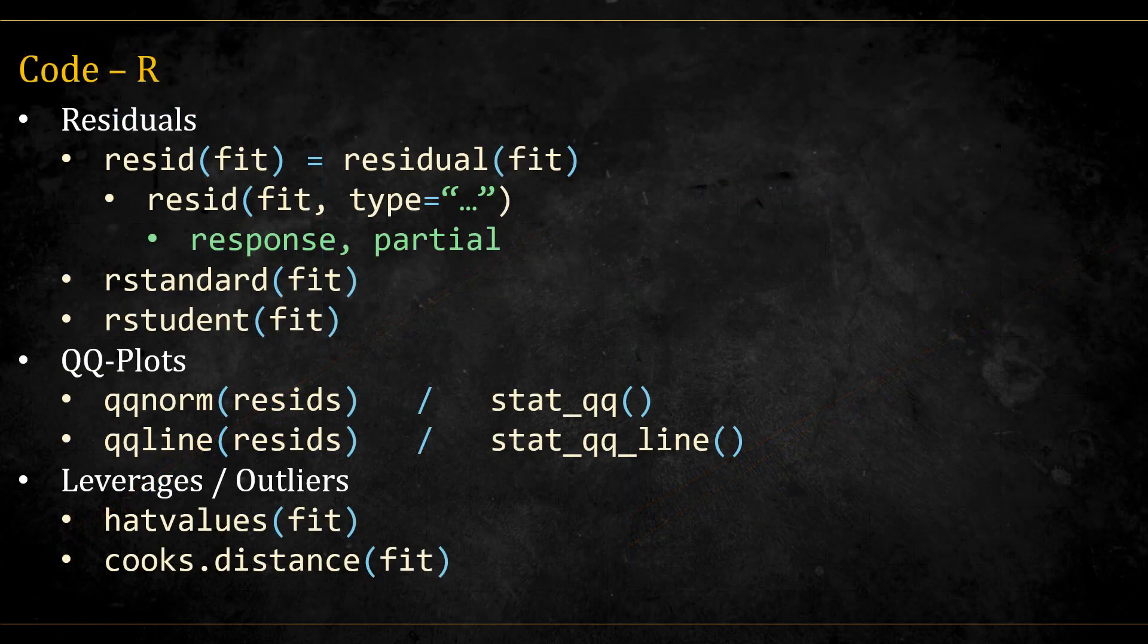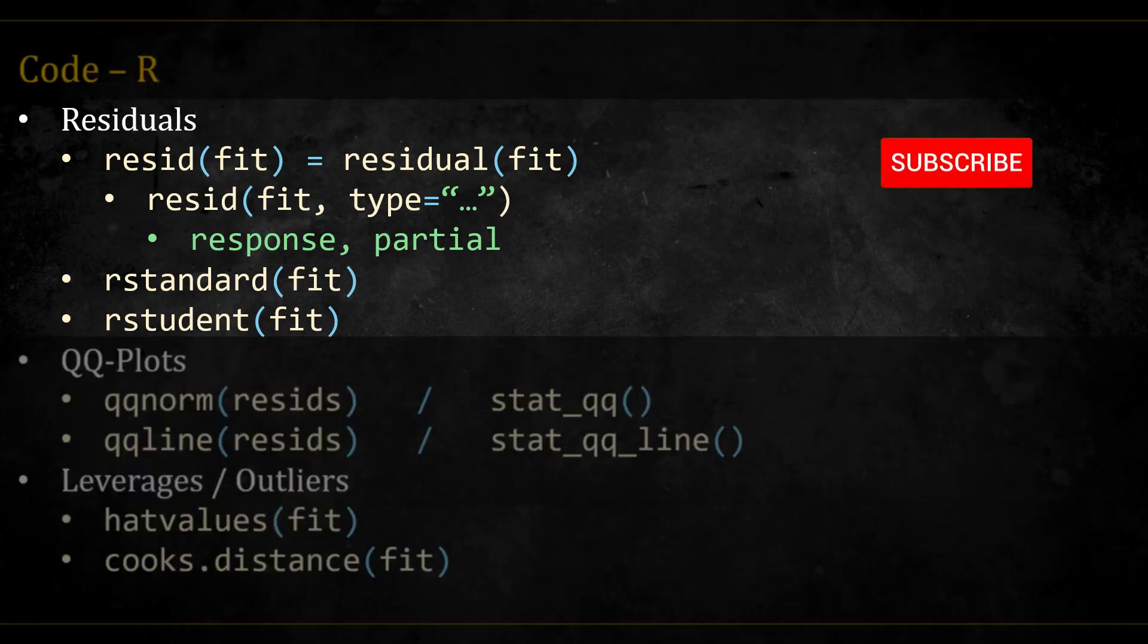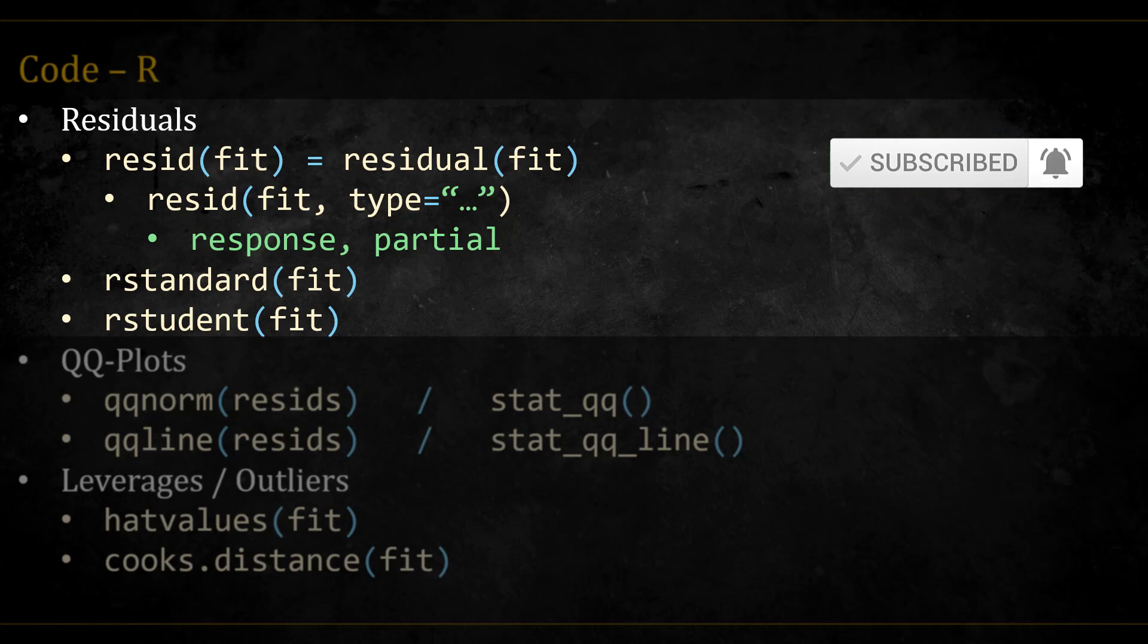Finally, let's see how we can get these diagnostics in R. For the residuals, we can either use the residual function or the resid function over a fitted model. We can also specify the type of the residual and specify we want the partial residuals, for example. If we want the standardized or the studentized residuals, we can use the rstandard and rstudent functions.